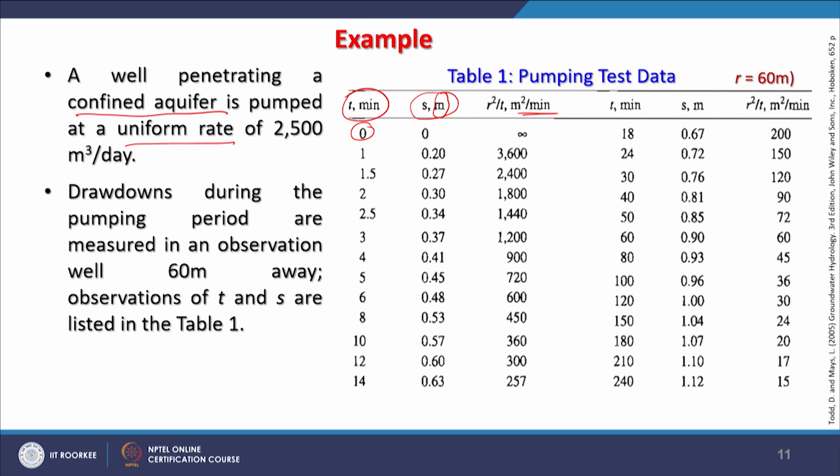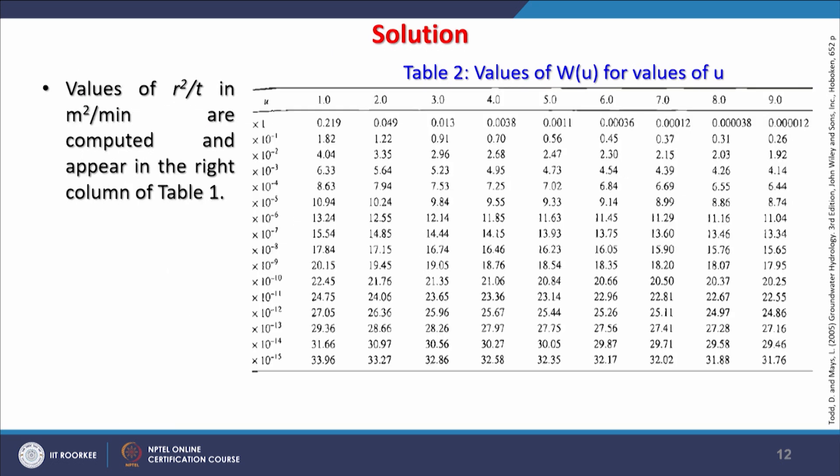Drawdowns during the pumping period in confined aquifer conditions are measured in an observation well. We have considered the distance from the pumping well to observation well as 60 meters away. Those observations of t and s are listed as we are seeing in the table. Using the Theis method, we can determine the transmissibility T and storage coefficient or storability of this confined aquifer.